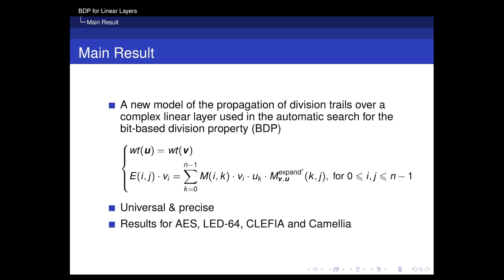In this paper, we propose a new model for the propagation of division trials over a complex linear layer, which can be used in the automatic search for the bit-based division property. The complex linear layer includes, for example, the MDS matrix used in AES or Cliffier. It should be different from the simple case, such as the bit-based linear layer used in PRESENT or GIFT, or the binary matrix used in SKINNY. Our new model consists of n-squared plus 1 constraints.